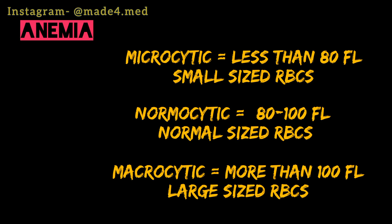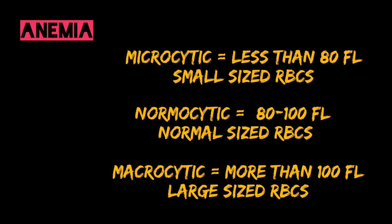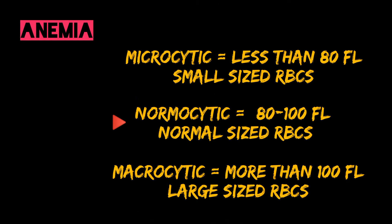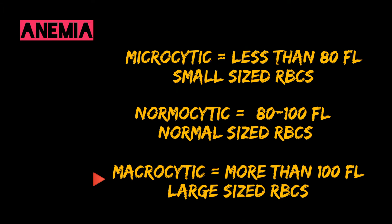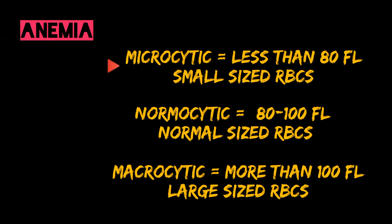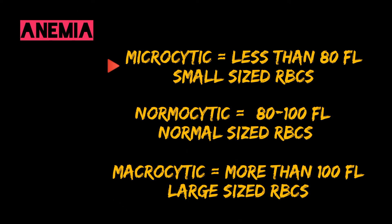Based on morphology of RBCs, anemia can be classified into three types: normocytic, macrocytic, and microcytic. In normocytic, the RBC volume is in the normal range, that is 80 to 100 femtolitres. In macrocytic, the cells have a larger volume, greater than 100 femtolitres. In microcytic, the volume is less than the normal range, that is less than 80 femtolitres.